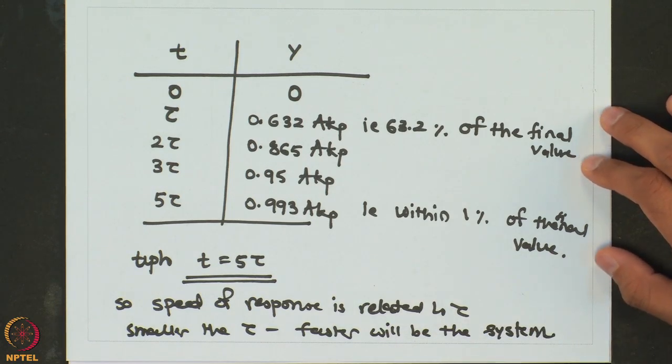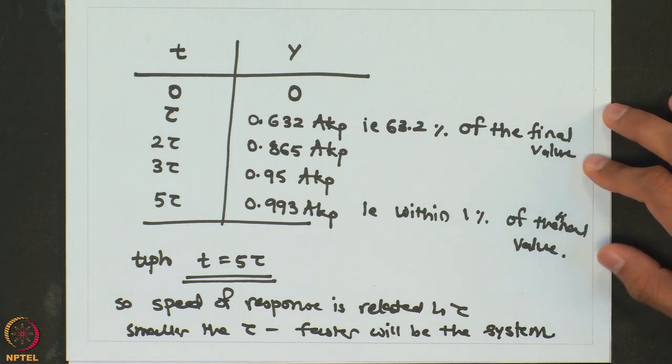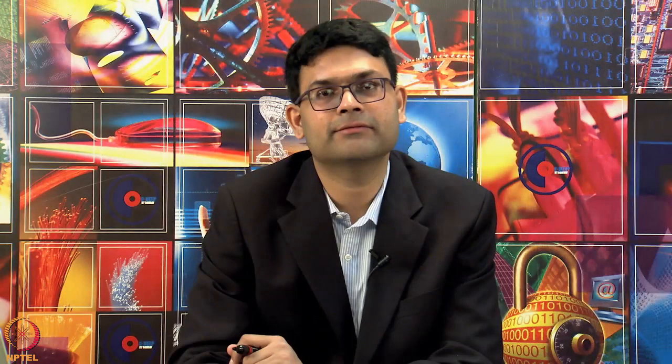That is the significance of the time constant. If we are comparing two first-order systems, we can compare their speed of response by comparing the values of tau for the two systems.